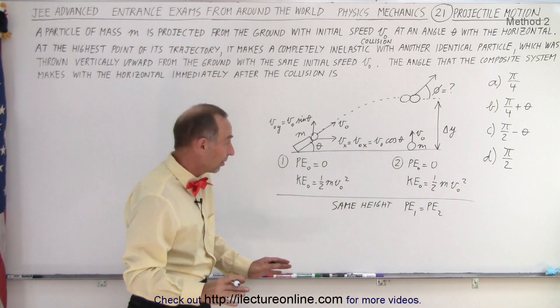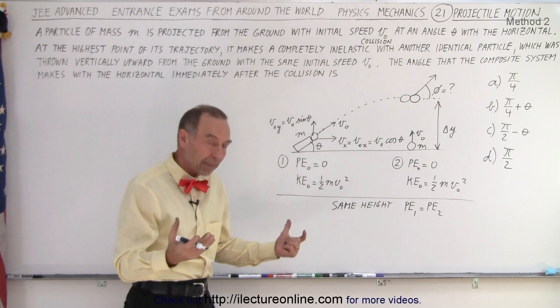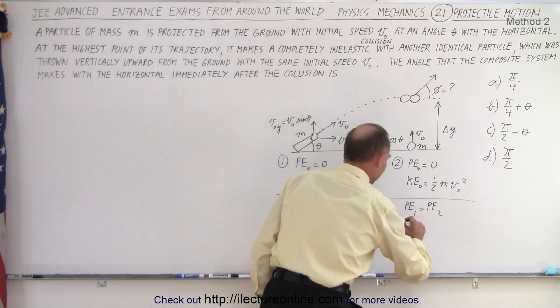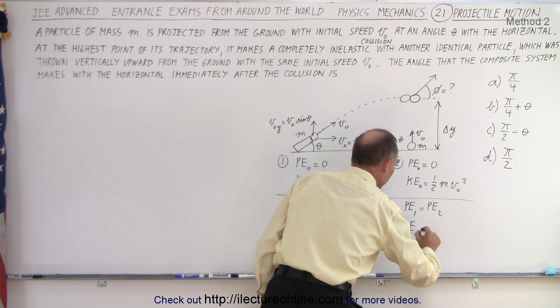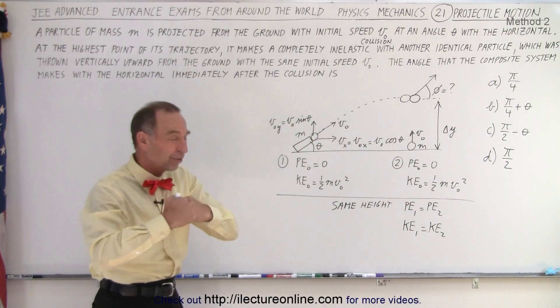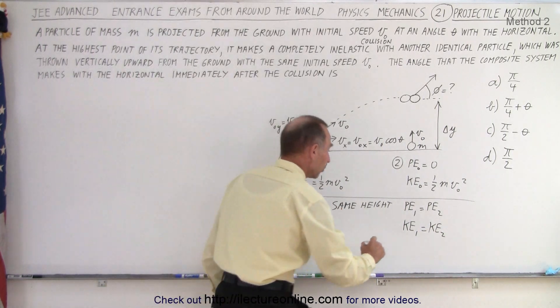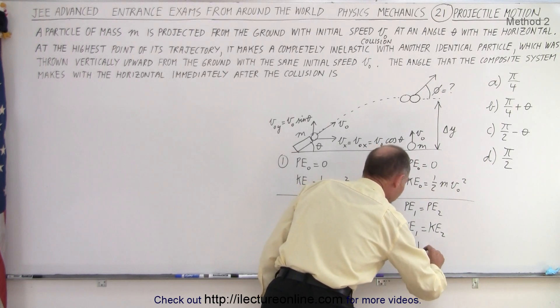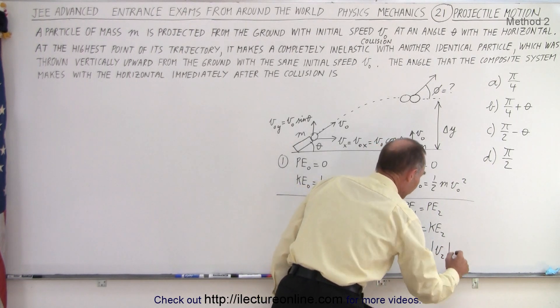And because of that, since they start with the same amount of energy and they have the same potential energy at the top, that means that the kinetic energy of one must equal the kinetic energy of particle two. In other words, at the point of collision, they both must have the same kinetic energy, which means that the magnitude of the velocity of one must equal the magnitude of the velocity of two.